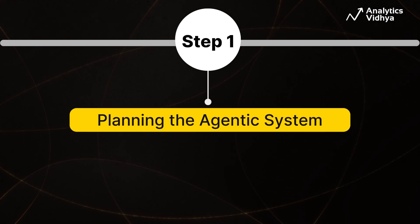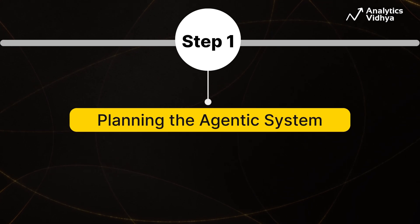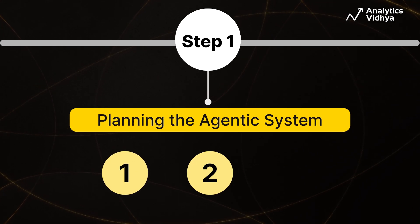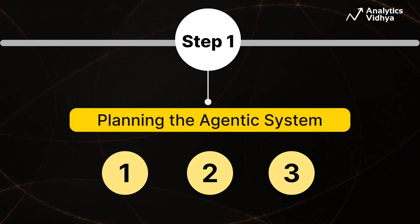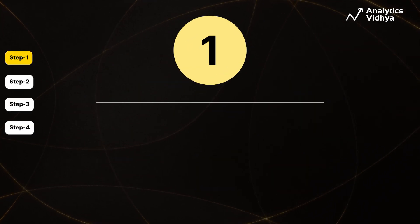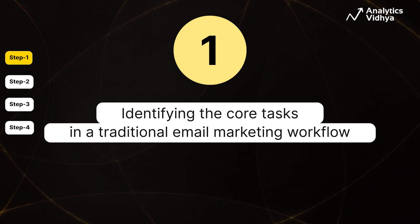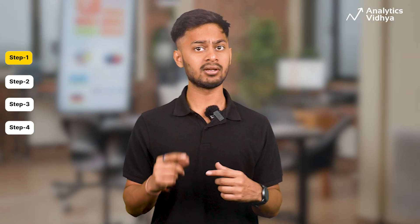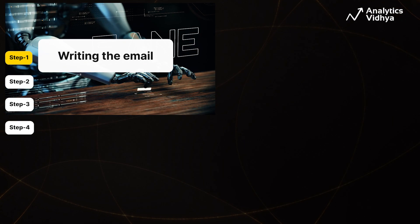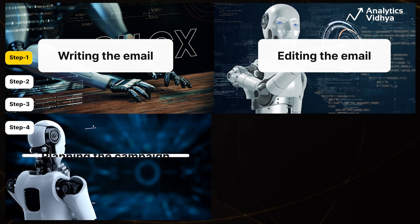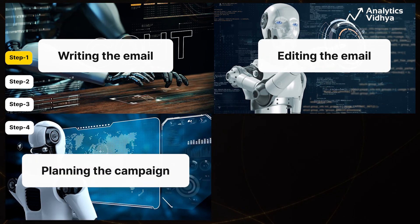Step 1: Planning the agentic system. Within this step, there are three things to follow. We begin with identifying the core tasks in a traditional email marketing workflow. There are four primary tasks: writing the email, editing, planning the campaign, and finally, sending it.